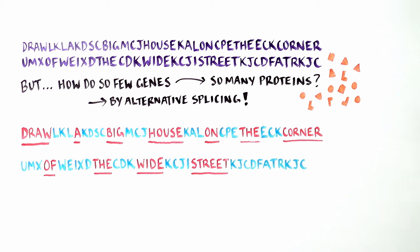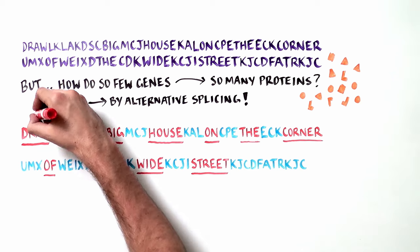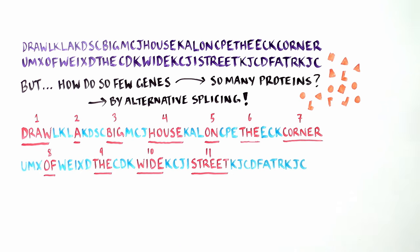There are often many different ways to assemble the exons, just as there are different ways to combine words to form a sentence. 'Draw a big house on the corner of the wide street'—we used 11 exons to form this thought. But these same exons could be combined differently to produce different meanings, the equivalent of different proteins.